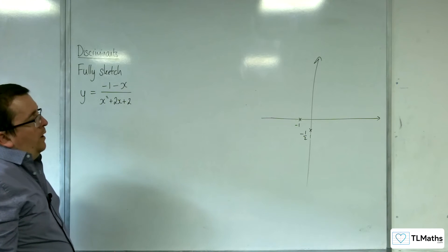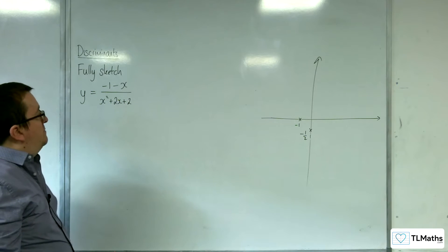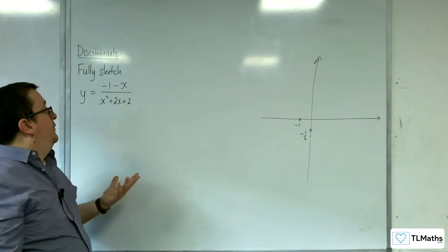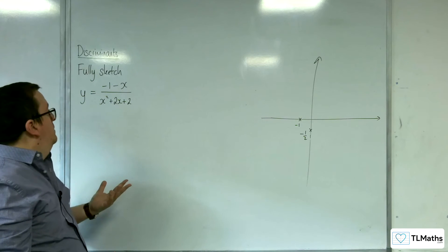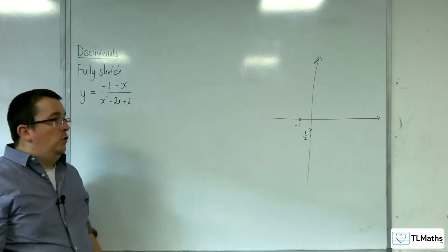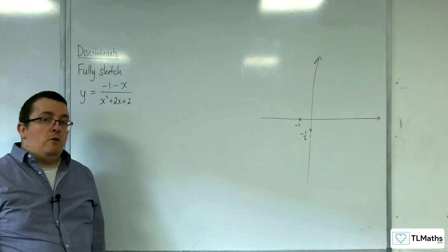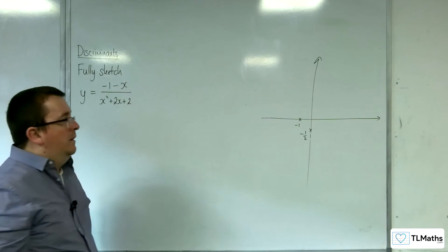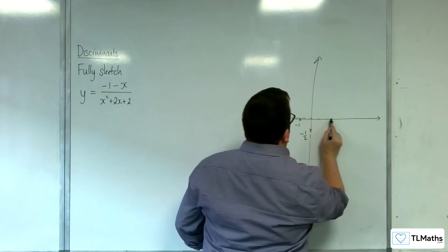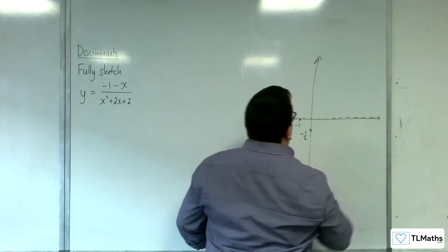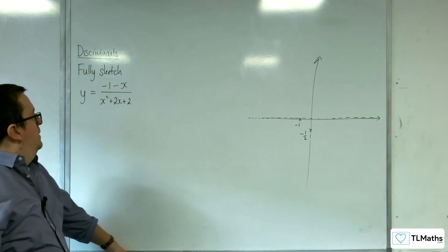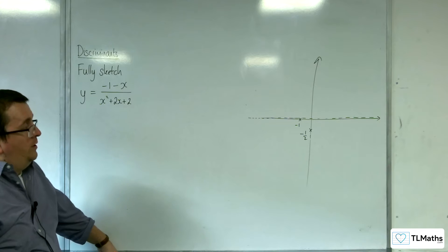How about a horizontal asymptote? Well, the numerator is a polynomial of degree 1 and the denominator is order 2, and so y equals 0 will be a horizontal asymptote. So the x-axis is a horizontal asymptote here.